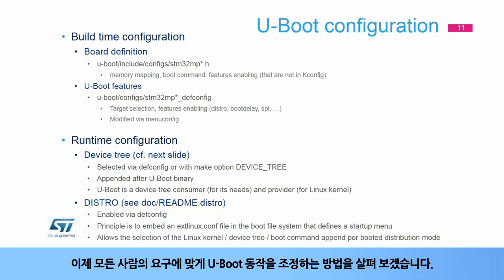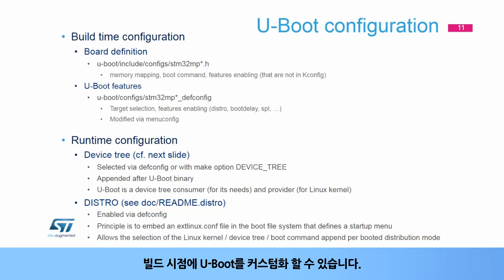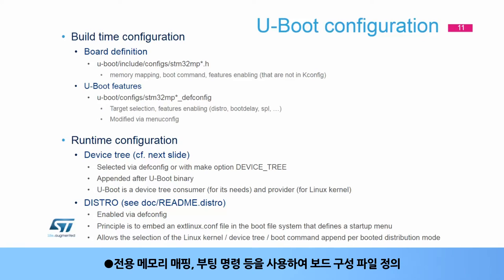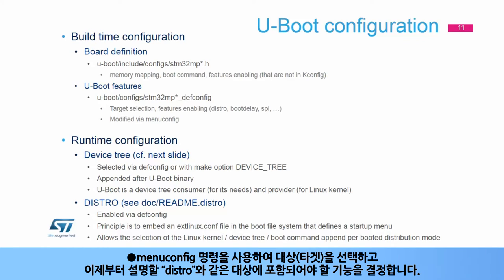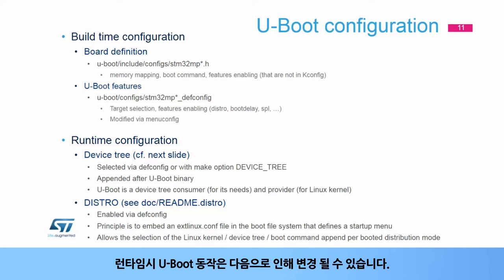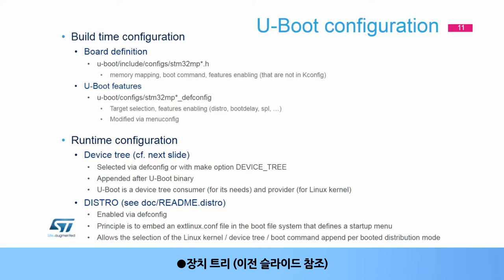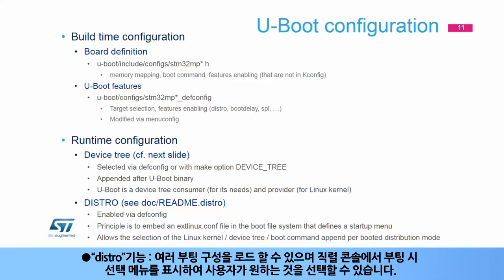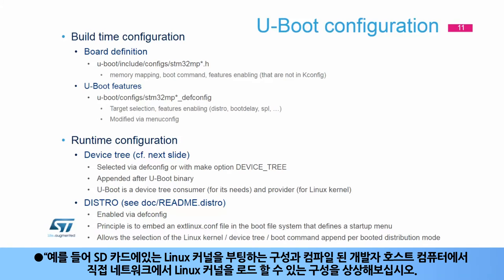U-Boot behavior can be tuned to fit everyone's needs. At build time, it is possible to customize U-Boot by defining a board configuration file with dedicated memory mapping, boot command, etc., and using the menu config command to select the target and decide which features to embed, like distro. At run time, U-Boot behavior can be changed thanks to the device tree and the distro feature, which allows loading of several boot configurations and shows a selection menu at boot time in the serial console. For instance, a configuration to boot the Linux kernel from the SD card and another to load the kernel from the network.